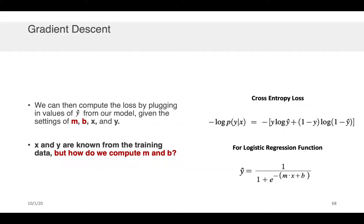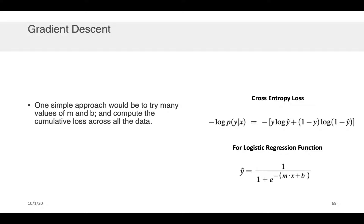Now x and y are obviously known from the training data, but there's still this question of how do you go about computing the m and the b? Well, one very simple approach would be to try many values of m and b and to just compute the cumulative loss across all that data. So for example, I could hold m to be 1, I could hold b to be 1,